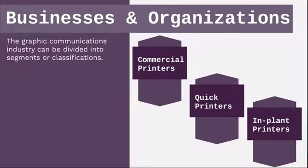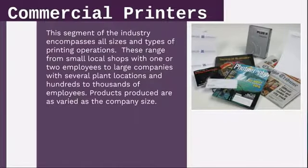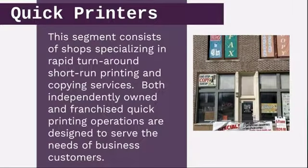The graphic communication industry can be divided into different segments. The three main ones are commercial printers, quick printers, and in-plant printers. Commercial printers encompass all sizes and types of printing operations, ranging from small local shops with one or two employees to large companies with several plant locations and hundreds of thousands of employees. Products produced are as varied as the company size. Quick printers specialize in rapid turnaround of short-run printing and copying services. These are both independently owned and franchise operations, designed to serve the needs of business customers.